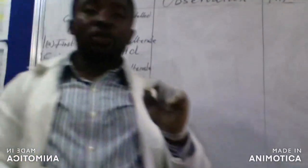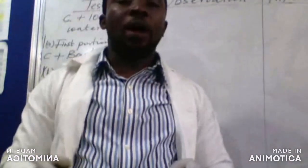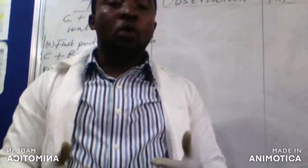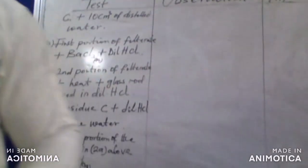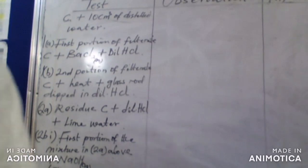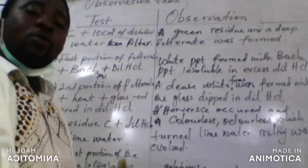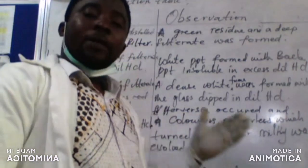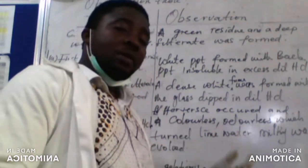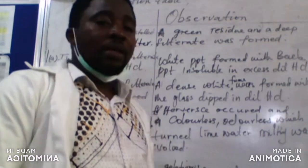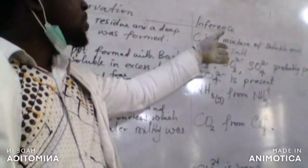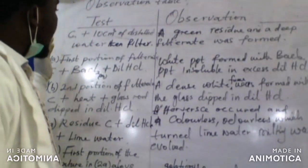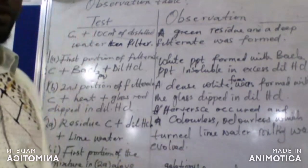Remember that the salt mixture must be in the ratio of 1:1, meaning the masses of the two samples need to be equal. I have my weighing balance. We were asked to add 10 cm³ to sample C and filter. We observed a green residue and a deep blue filtrate, and our conclusion is that C is a mixture of soluble and insoluble salts.